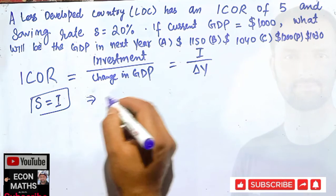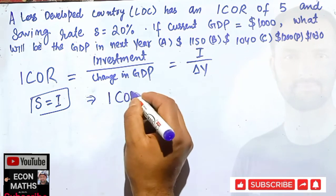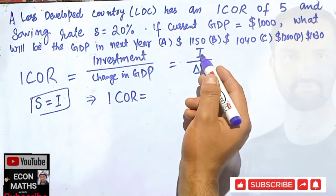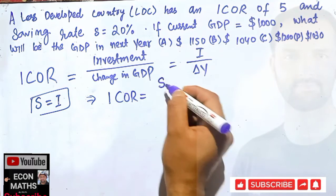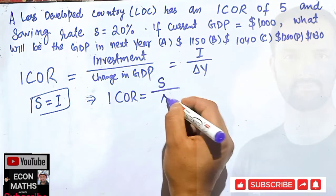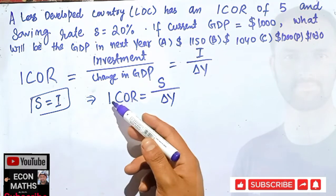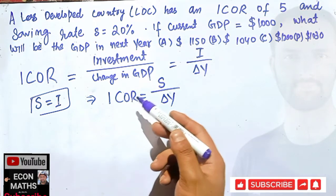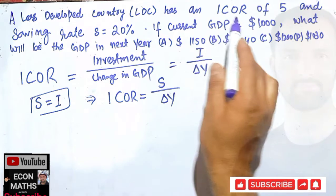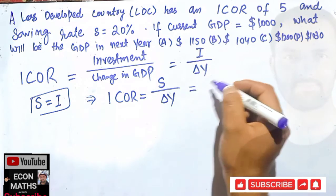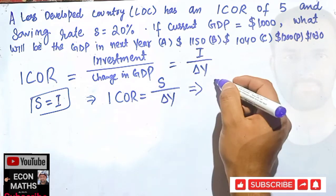So we can write it like this: ICOR is equal to, in place of I, I can write S upon delta Y. Now what is our incremental capital output ratio? This is 5, which is given. So I can write in place of ICOR, I will write 5 is equal to